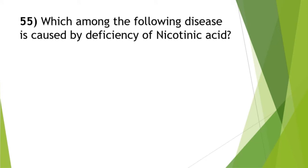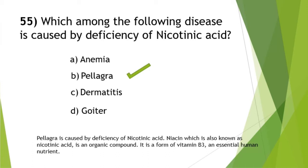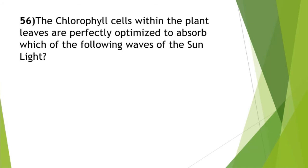Which disease is caused by deficiency of nicotinic acid? This is a very important and repeated question. The answer is option B — pellagra. Pellagra is caused by deficiency of nicotinic acid (niacin), which is a form of vitamin B3 and an essential human nutrient. Points related to vitamins B1, B2, B3, etc. have been explained in our first video.